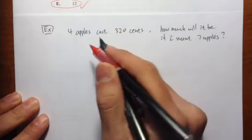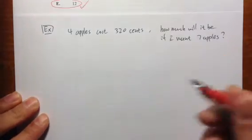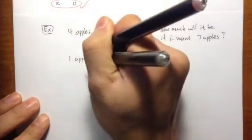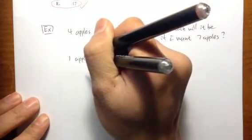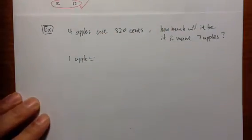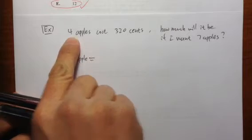So four apples cost 320 cents. One apple is what? How do you figure out the cost of each apple? You would just think that's 80 cents, right?